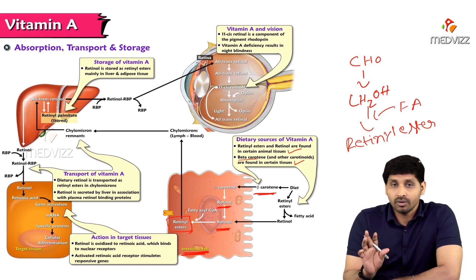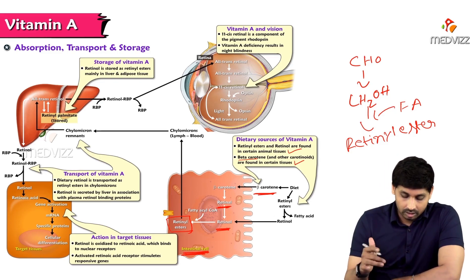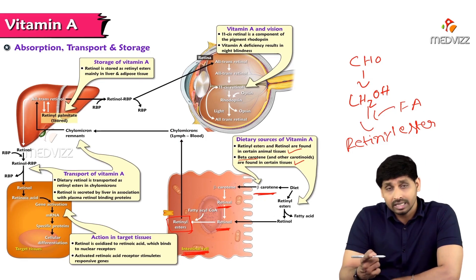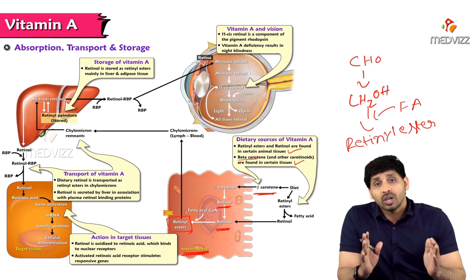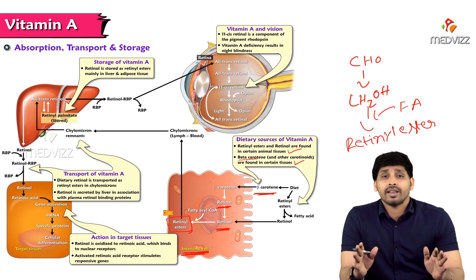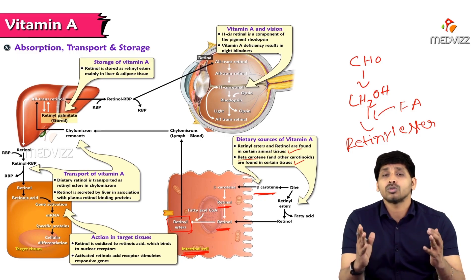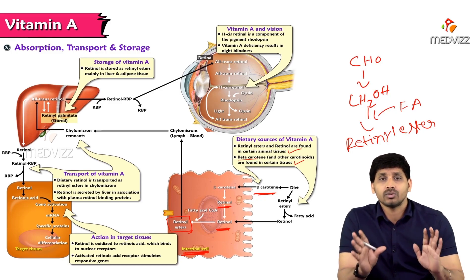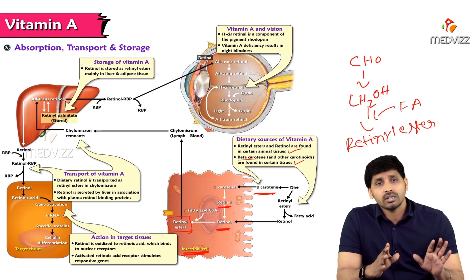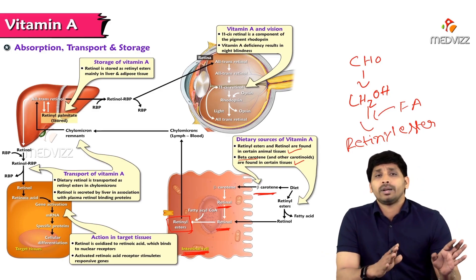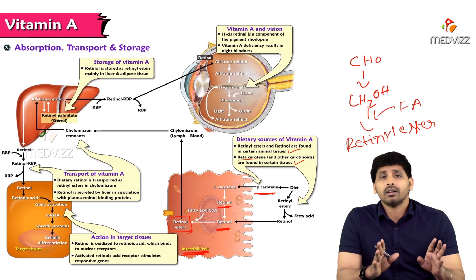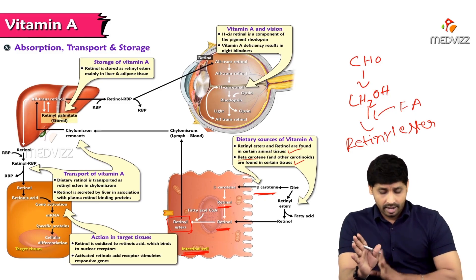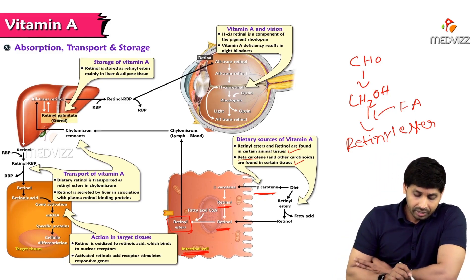In the intestinal mucosal cells, retinol esters are formed along with lipids. These retinol esters need to be transported in circulation, but since they are insoluble in nature, they require a soluble carrier. That carrier is chylomicron — a lipoprotein involved in transportation of triacylglycerol from the intestine to the liver. In the same way it carries triacylglycerol, chylomicron also carries fat-soluble vitamins, including vitamin A, to the liver.